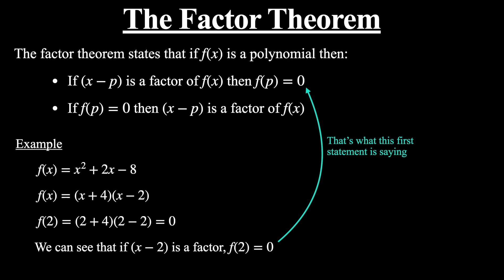Now the second statement is less obvious, but it says we can go the other way as well. If we start with the fact that f(2) equals 0, we can say that x minus 2 will be a factor. So if f(p) equals 0, then x minus p is a factor of f(x). I want you to accept these for now — I will prove these statements at the end of the video.